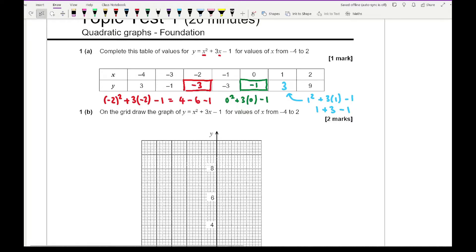The next question says on the grid draw the graph of y equals x squared plus 3x minus 1 for the values of x from minus 4 to positive 2. With this graph it's always worth making sure you're aware of what it looks like. That is going to produce a parabola but it's going to be a U shape because it's a positive x squared. So that's what my graph should look like. All my coordinates should join up to make a nice smooth U shape.